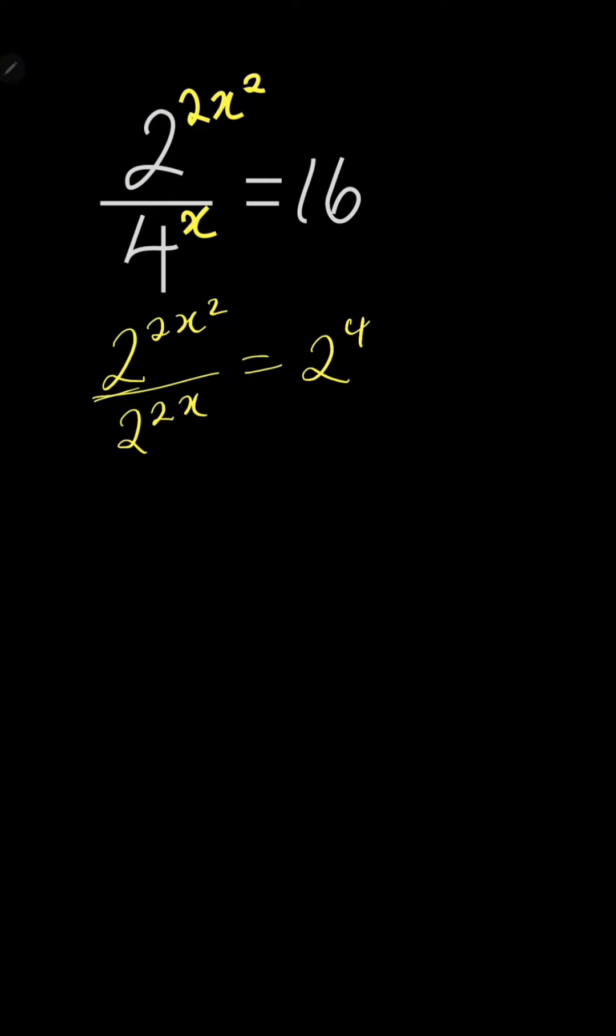From the laws of indices, when you're dividing, you subtract the powers. So you have 2 to the power 2x squared minus 2x equals 2 to the power of 4.